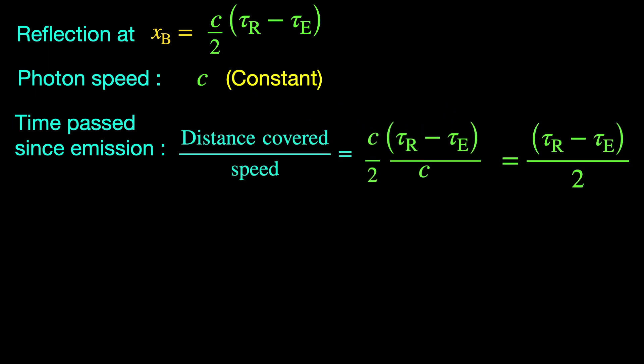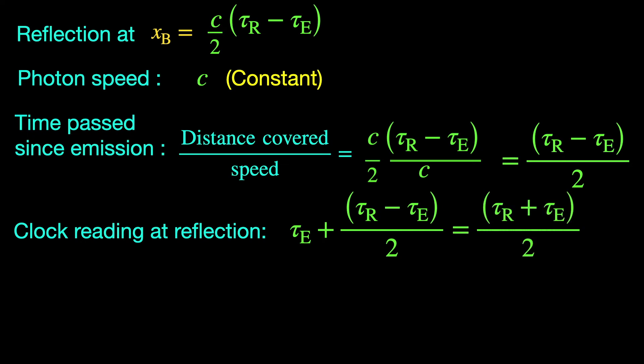the observer's clock must have progressed by half of the total flight duration from the photon emission instant tau_E and should read tau_R plus tau_E by 2. So, this is the observer's clock reading at the event B.